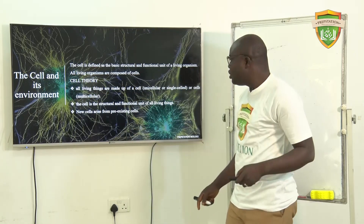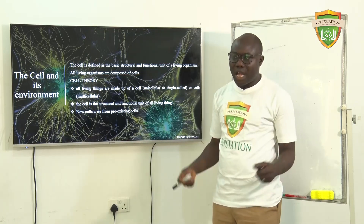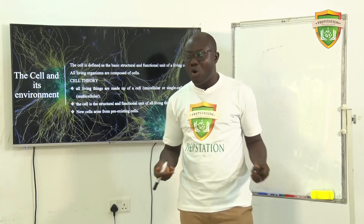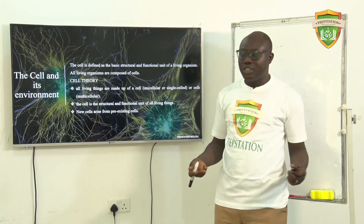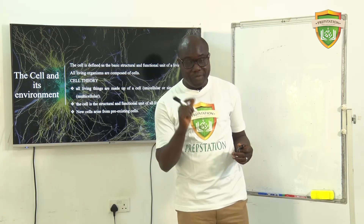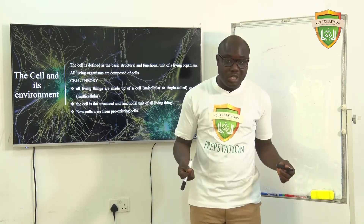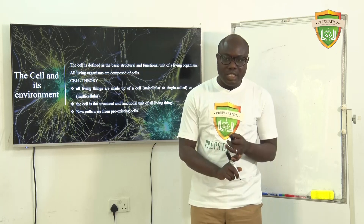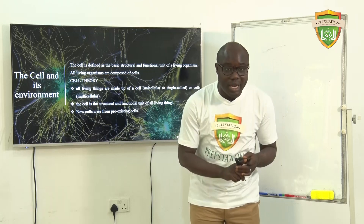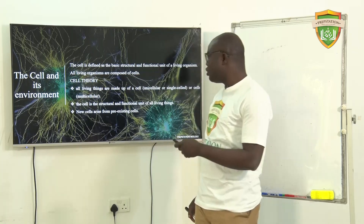The first cell theory states that all living things are made up of cells — either a single cell organism, which we know as a unicellular organism, or a multicellular organism. Single cell organisms are organisms that have just a single cell in them; for example, bacteria. Multicellular organisms include human beings, dogs, lions, and even plants.